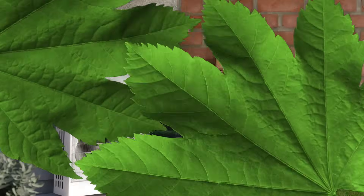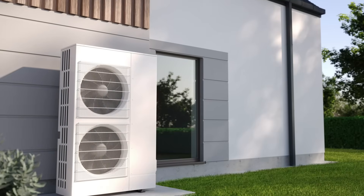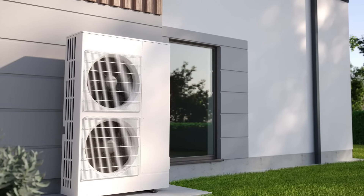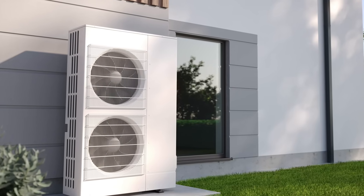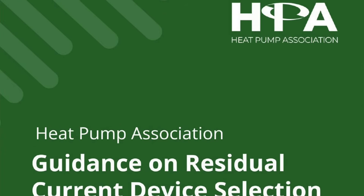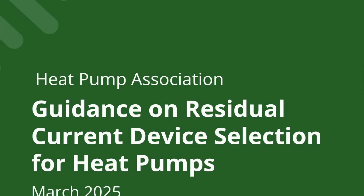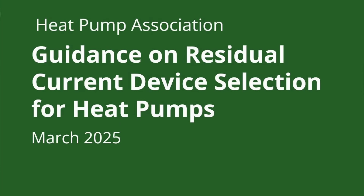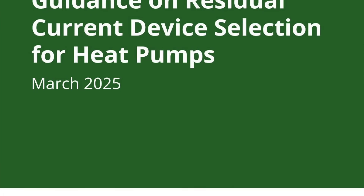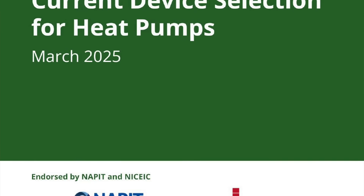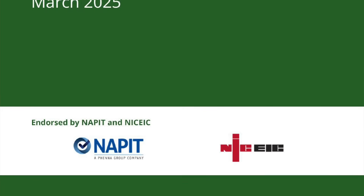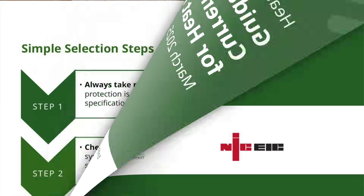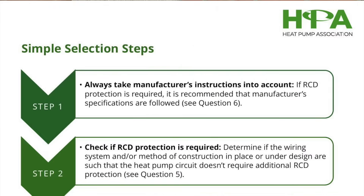Selecting the correct RCD type isn't just about meeting regulations — it's about ensuring your installation functions smoothly without unnecessary tripping or safety risks. To help you select the correct RCD, the Heat Pump Association have produced a document called the Guidance on Residual Current Device Selection for Heat Pumps, made in association with NAPIT and the NICEIC. In that document, we find an easy-to-follow four-step process to get the right device.